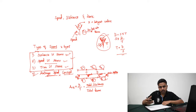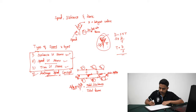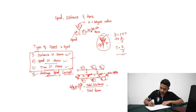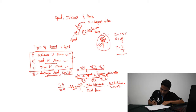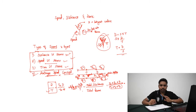We need to add all the distances and all the time. When it comes to average speed, the formula becomes total distance divided by total time. The total distance is D1 plus D2 plus D3, and the total time is T1 plus T2 plus T3. Average speed equals total distance divided by total time. This can be easily solved in all the exams.